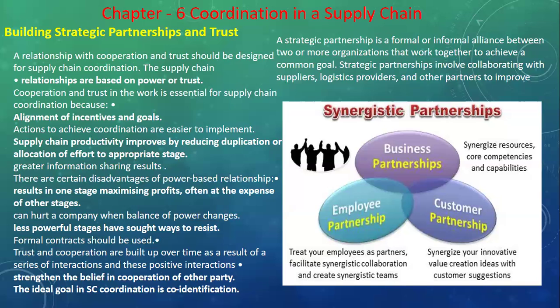Supply chain productivity is improved by reducing duplication and allocating effort to the appropriate stage. Supply chain productivity needs to improve by reducing duplication, which is helped by efficiency and allocation at the appropriate stage. Every stage of the system needs to be improved. Greater information sharing results when we share information at every stage regarding the system.